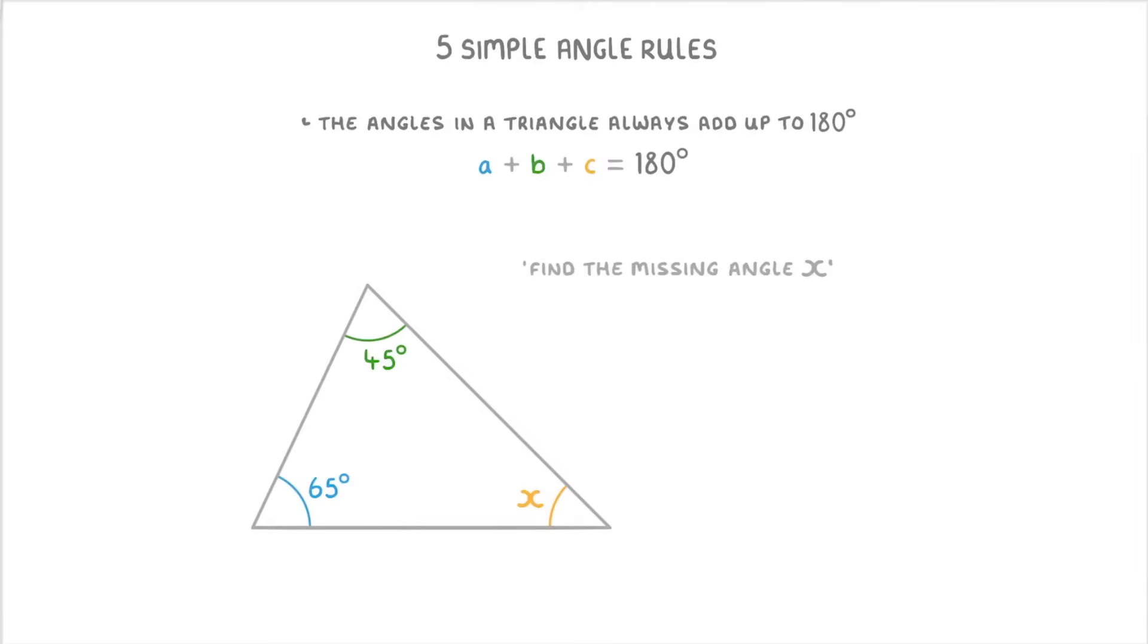So because we know that these three angles should add together to make 180 degrees, we can just do 65 plus 45 plus x equals 180. And then we can rearrange that to find x. So if we combine the 65 and 45, that will give us 110 plus x equals 180. And then if we subtract the 110 from each side, we'll be left with x equals 70. So we know that our missing angle was 70 degrees.